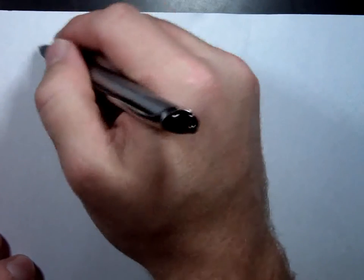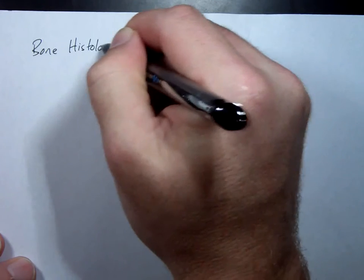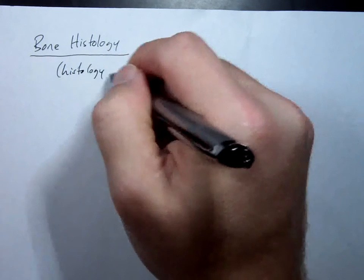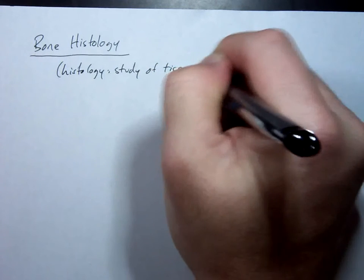The title of today's lecture is Bone Histology. Does anybody recall what the word histology means? Very simply, the study of tissues. Recall from our levels of organization: atoms to molecules, molecules to organelles, organelles to cells, cells to tissues. Tissues are groups of cells that are working together for a common function. So we're looking at that here in the bone.